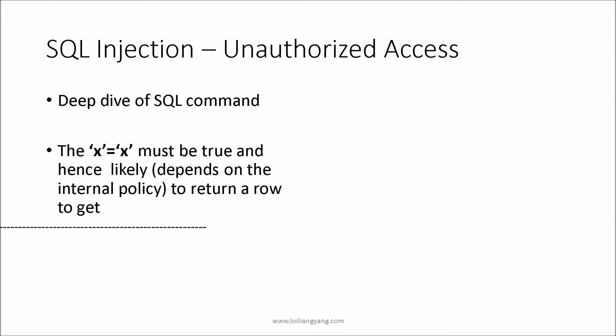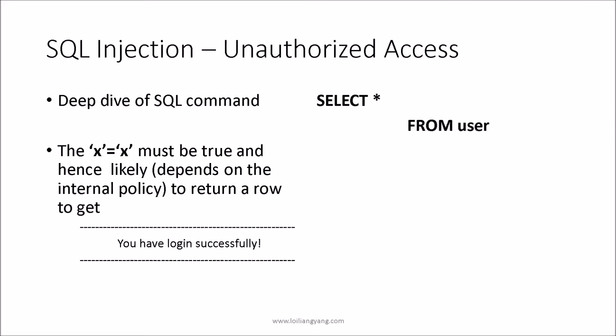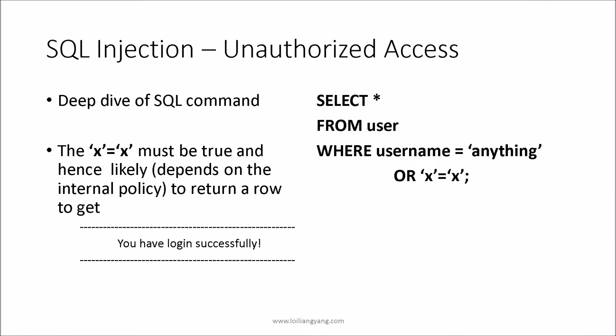At this juncture, we have successfully recognized a section where the web input form is vulnerable. We can try inserting commands to gain unauthorized access into the system. We can use the OR x=x command, which is always true, and hence it will always allow us to bypass authentication once the database query returns true. More often used is OR 1=1, because 1 is always 1, and the database query will return true.